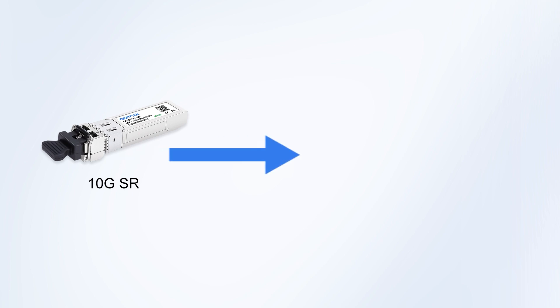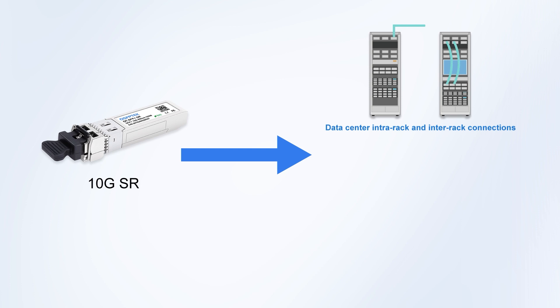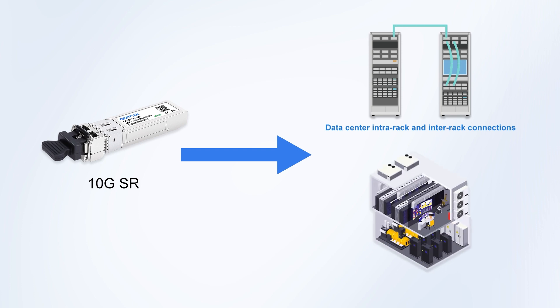Because of these differences, they're used in different scenarios. The 10G-SR module is great for connections inside data centers, like within a rack or between nearby racks, as well as for linking devices in different sections of an office building.